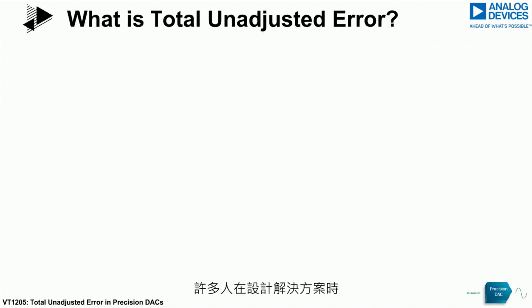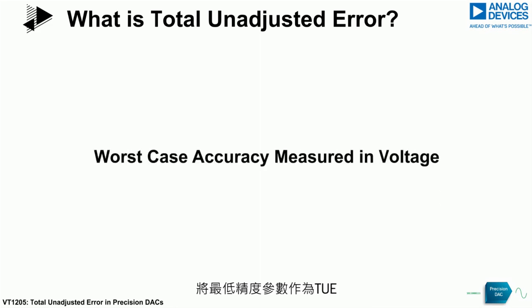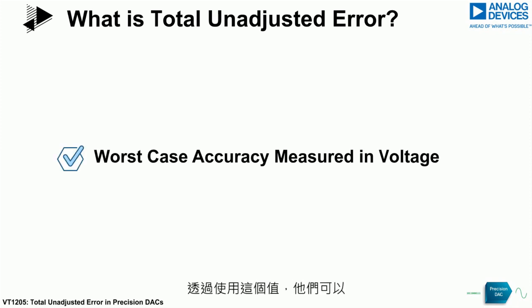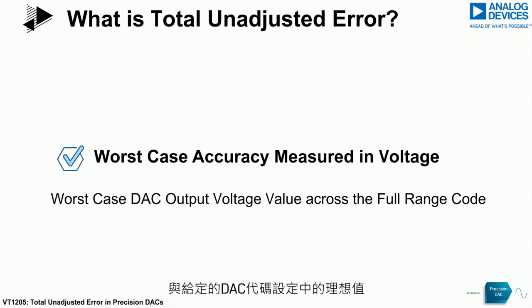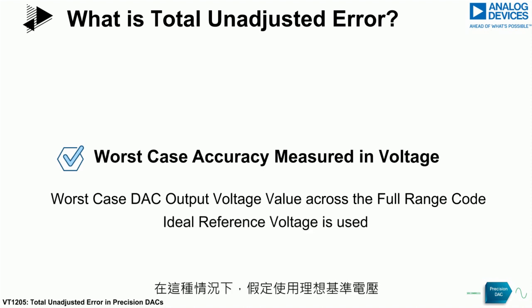Many people when designing their solution take the worst-case accuracy specification as the TUE, and this is the correct approach. By using this value, they are effectively taking the worst-case value that the actual DAC output value can be from the ideal value at any given DAC code setting. For this, it is assumed that a perfect voltage reference is used.